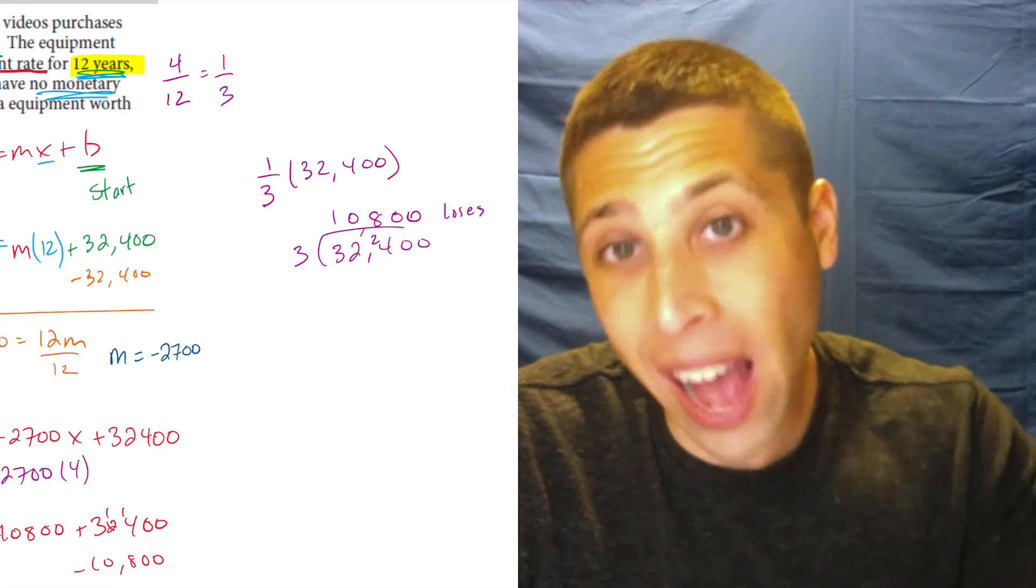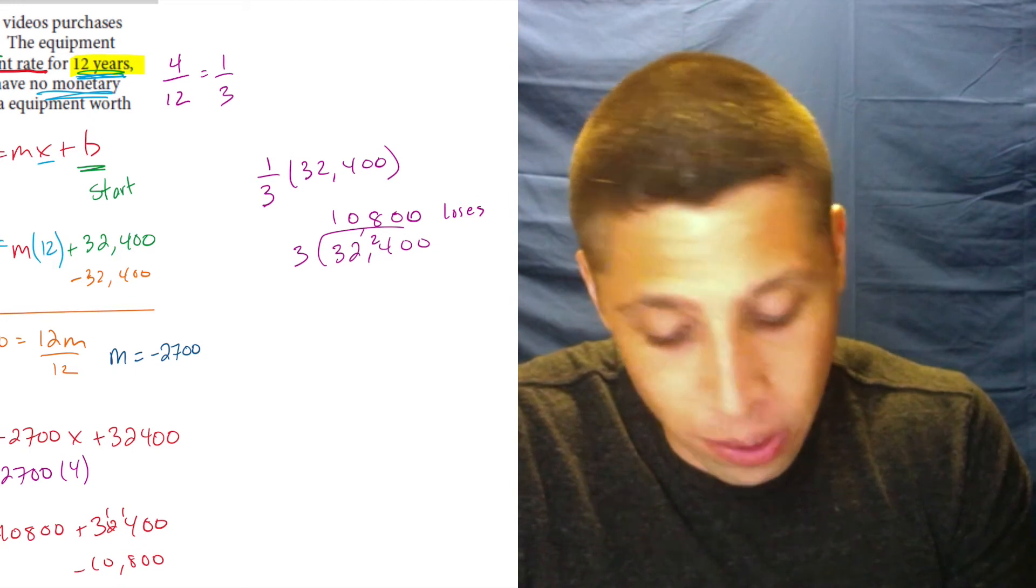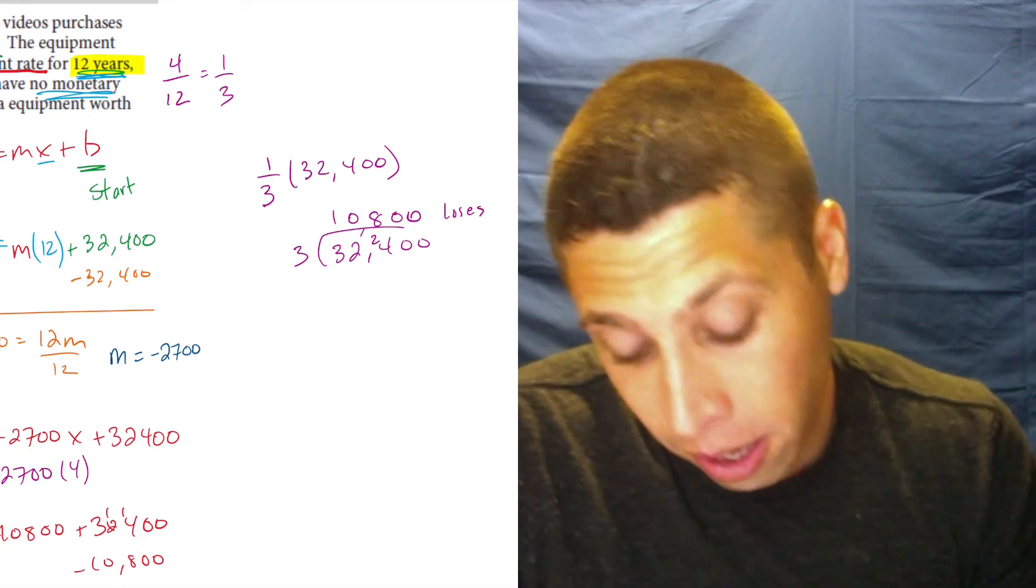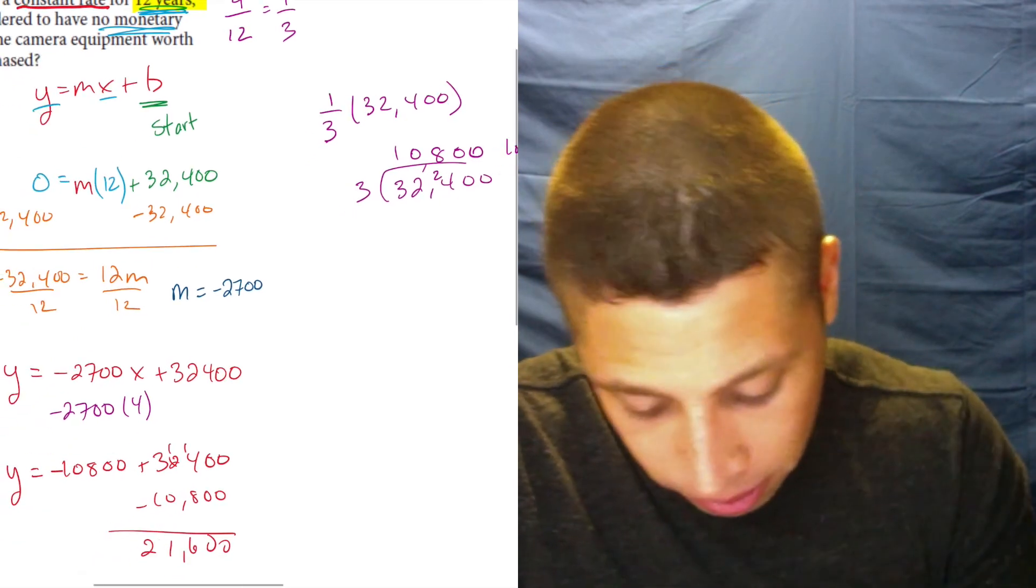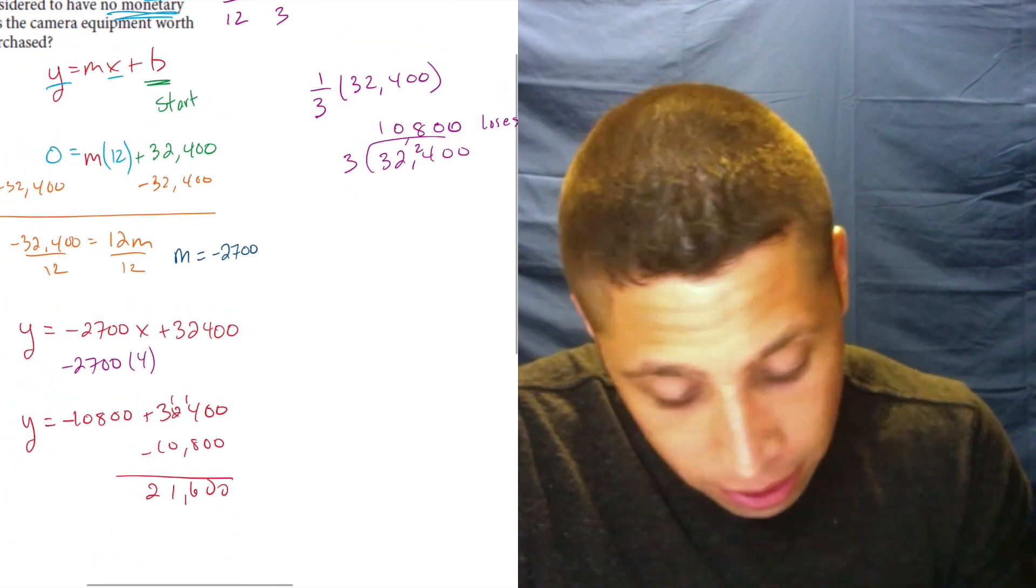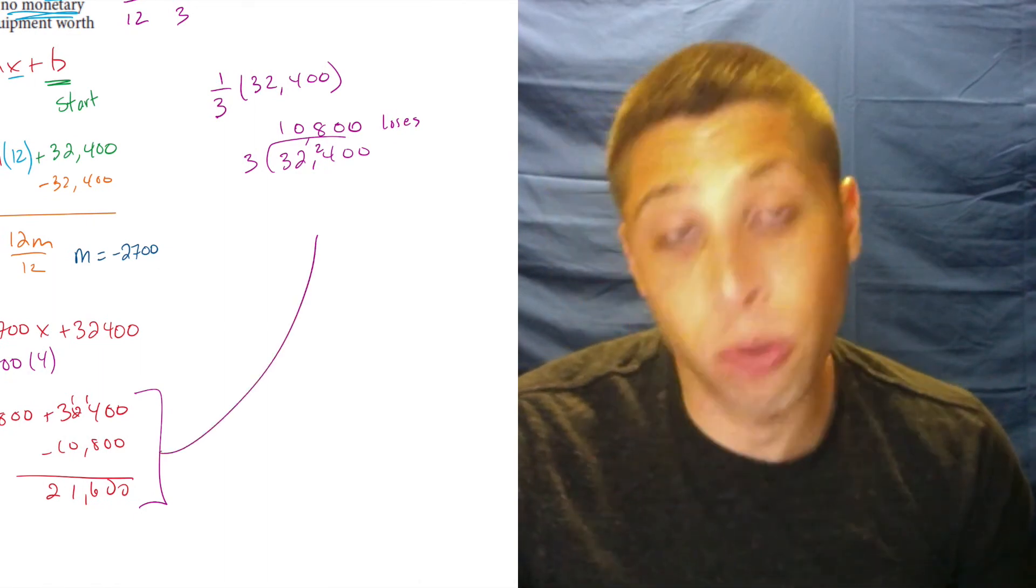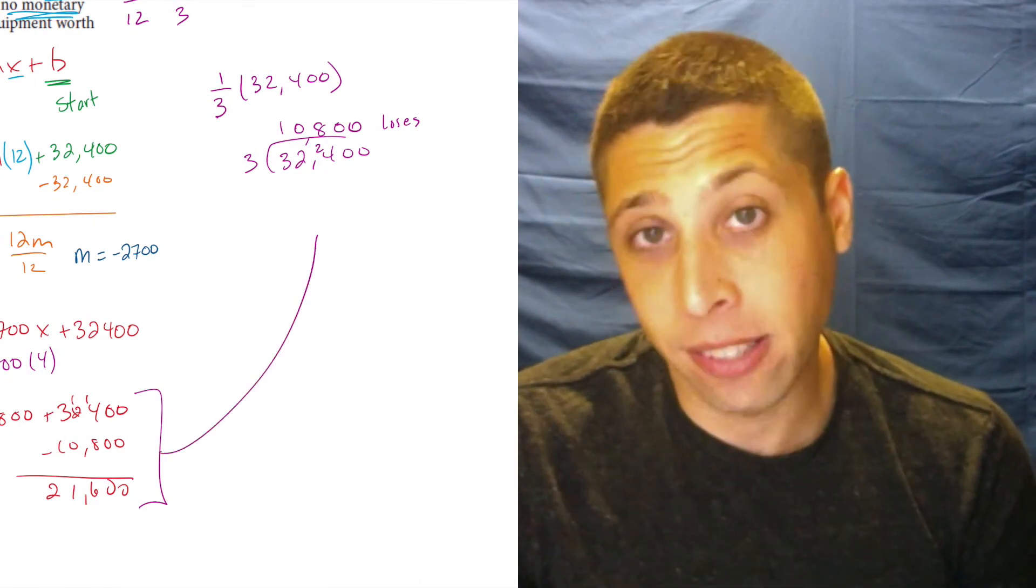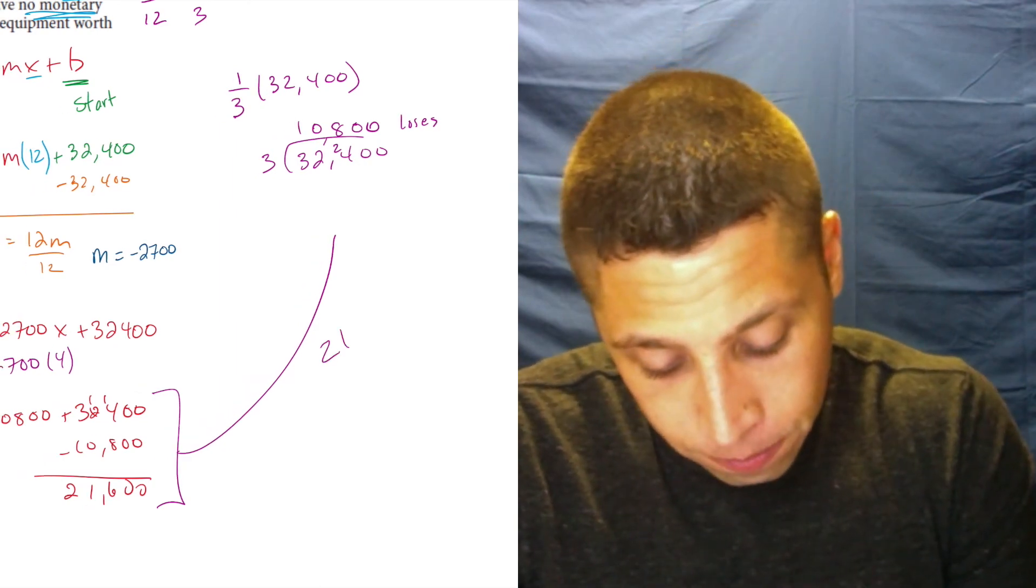It's losing a third. So what's its value after four years? It's two-thirds of the value. So we can do subtraction. We can do multiplication here. I'm going to do subtraction because that's what I did before. Actually, I don't even need to do it. It's literally now we would just do the same subtraction. 32,400 minus 10,800, and we would get the right answer. 21,600.